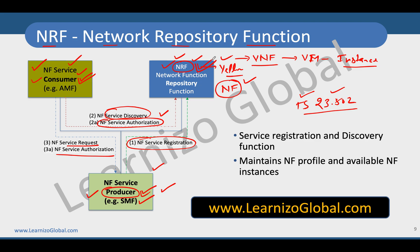The consumer checks what available instances exist for that network function and then reaches out to those network functions for service access. The typical role of NRF is service registration and discovery. It maintains all NF profiles — meaning NF producer profiles and available NF instances. In short, NRF works like yellow pages where producers publish their information and consumers fetch it to communicate with the producing network functions.